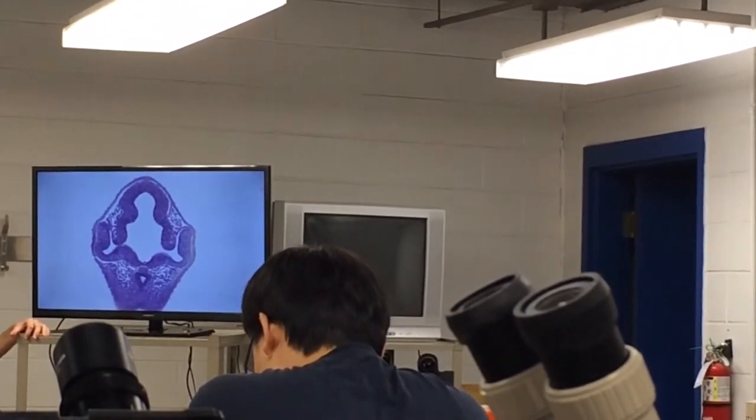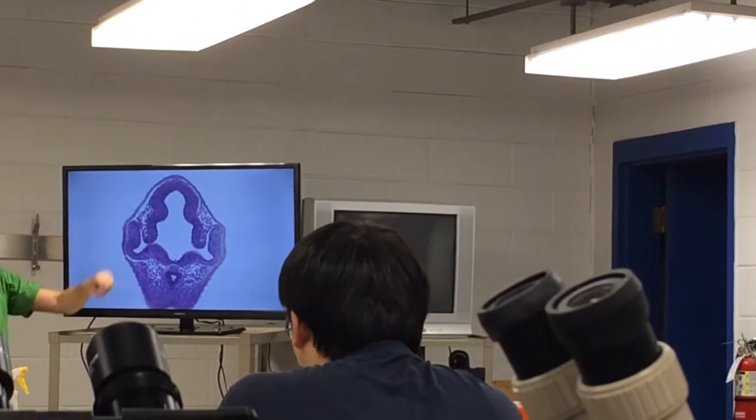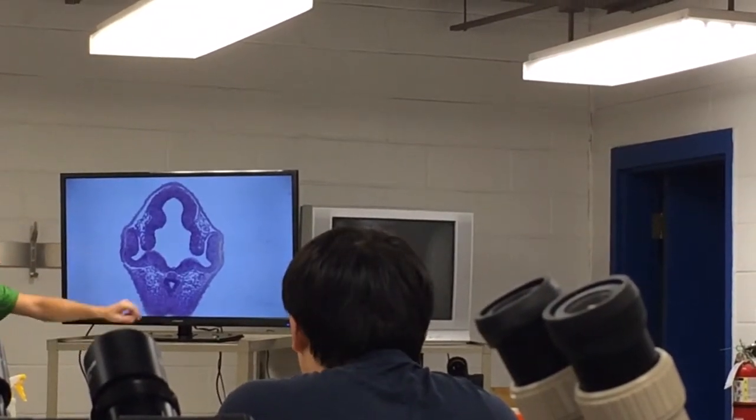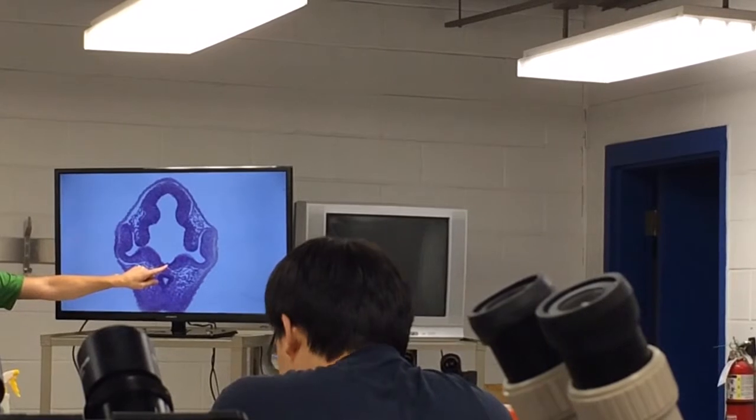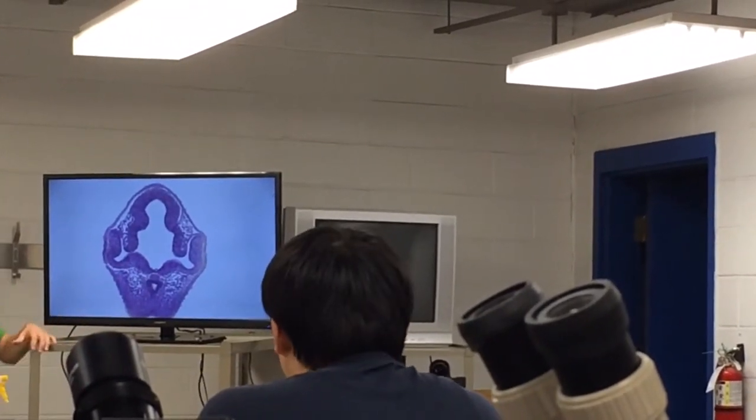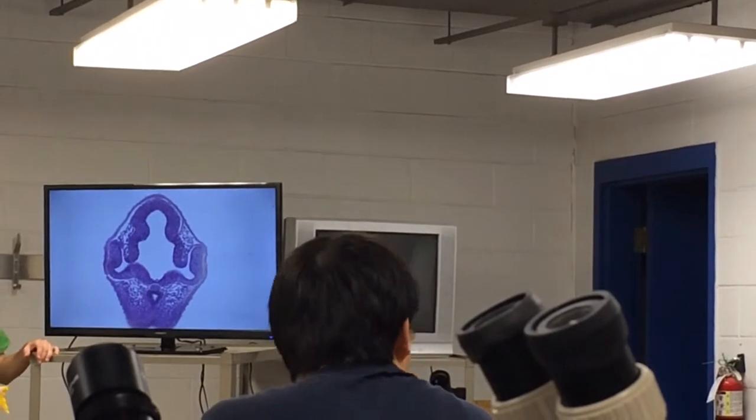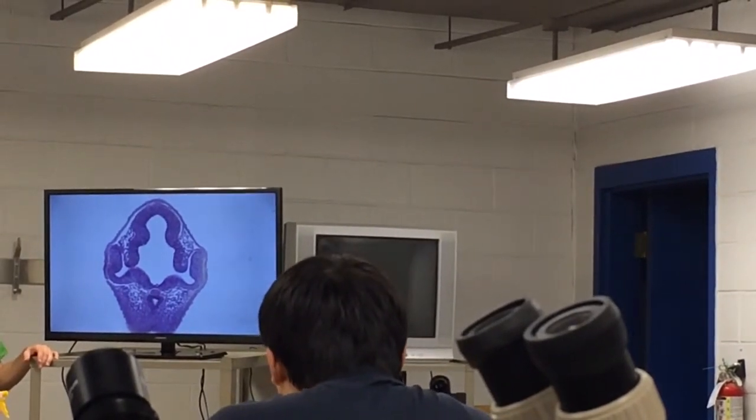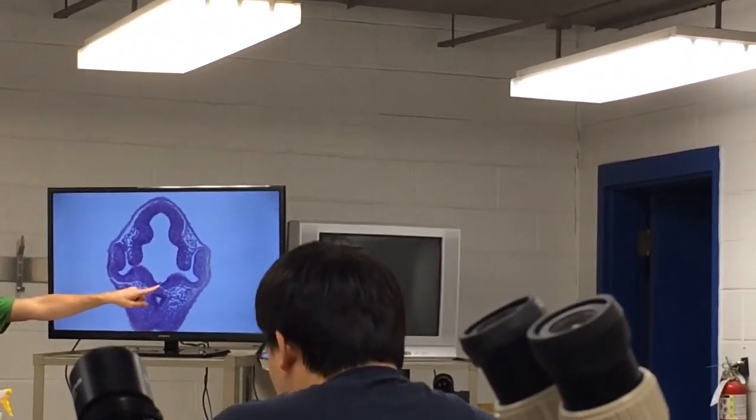So again, go back up to the board. Where is the floor of the forebrain? Right there is the floor of the forebrain. What does that produce? Go back to the sagittal section. I want an answer to that question. Floor of forebrain. Floor of diencephalon.